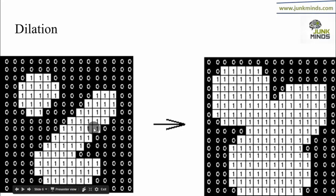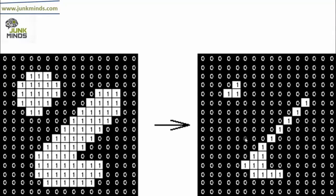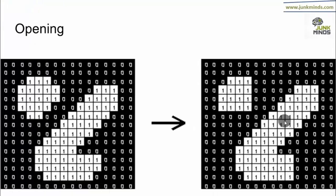Next is opening. Opening is derived from operations of erosion and dilation. What happens in opening is: first an erosion is performed, and then it is followed by a dilation. For example, this is an eroded image and dilation is applied on this image to produce the output.